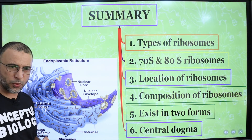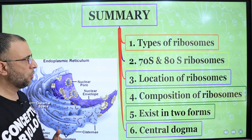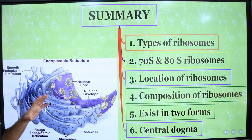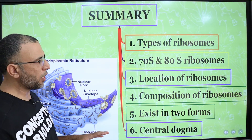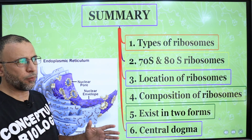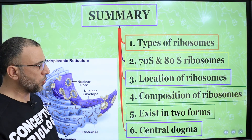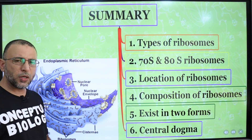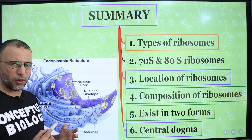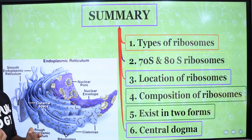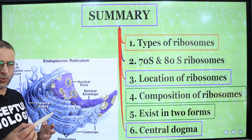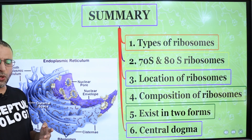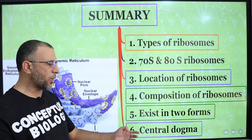To sum up: there are two types of ribosomes — prokaryotic ribosomes, which are 70S, and eukaryotic ribosomes, which are 80S. Prokaryotic ribosomes are directly present in the cytoplasm, but eukaryotic ribosomes exist in two forms: free state and attached form. Both are synthesized inside the nucleus in the nucleolus. Ribosomes are composed of ribosomal RNA and proteins. The central dogma describes replication — the flow of genetic information from DNA to DNA; transcription — from DNA to mRNA; and translation — from mRNA to protein. Replication, transcription, and translation are collectively known as the central dogma.